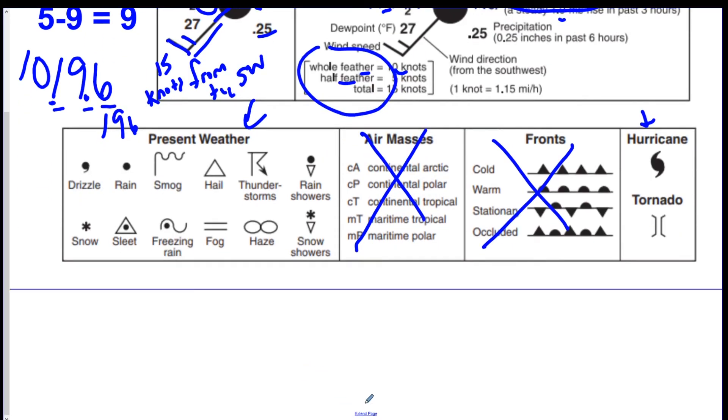Let's do an example. Let's say you see a station model and it says zero zero six. And I want to know what the pressure of that is. Well the first digit is a zero. So you add a ten in the front. And you put a decimal between the last two. So it's one thousand and six millibars.